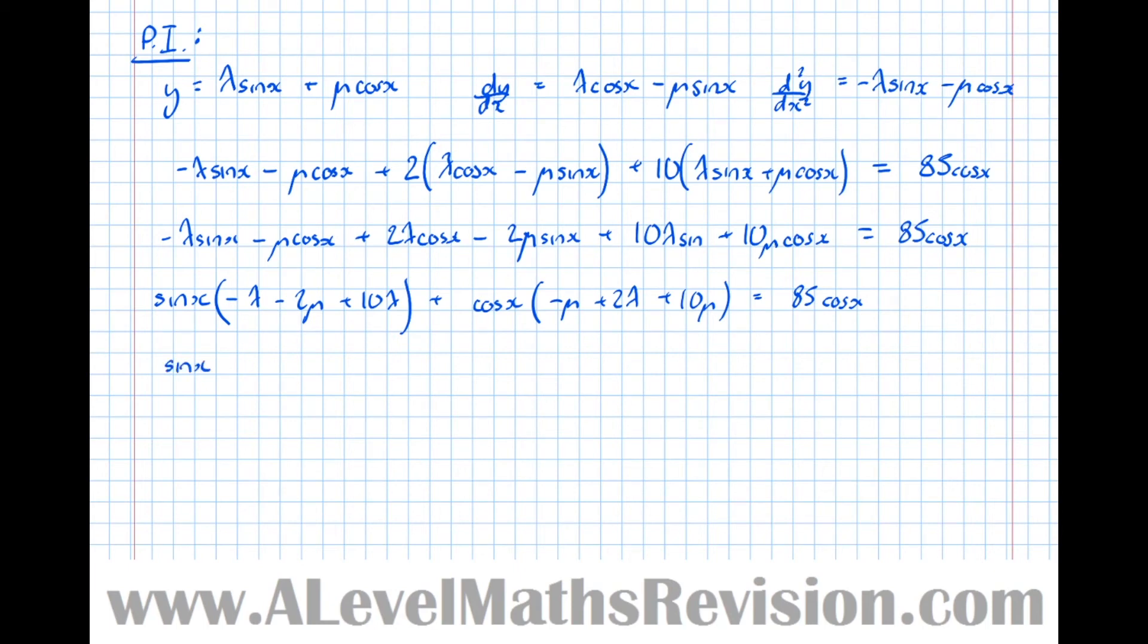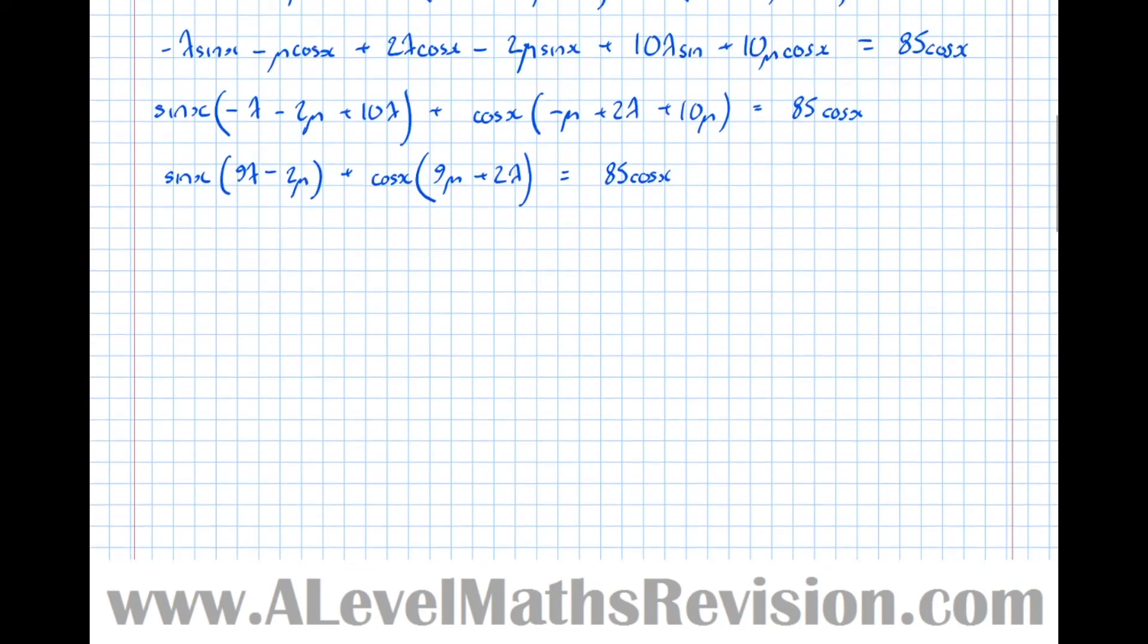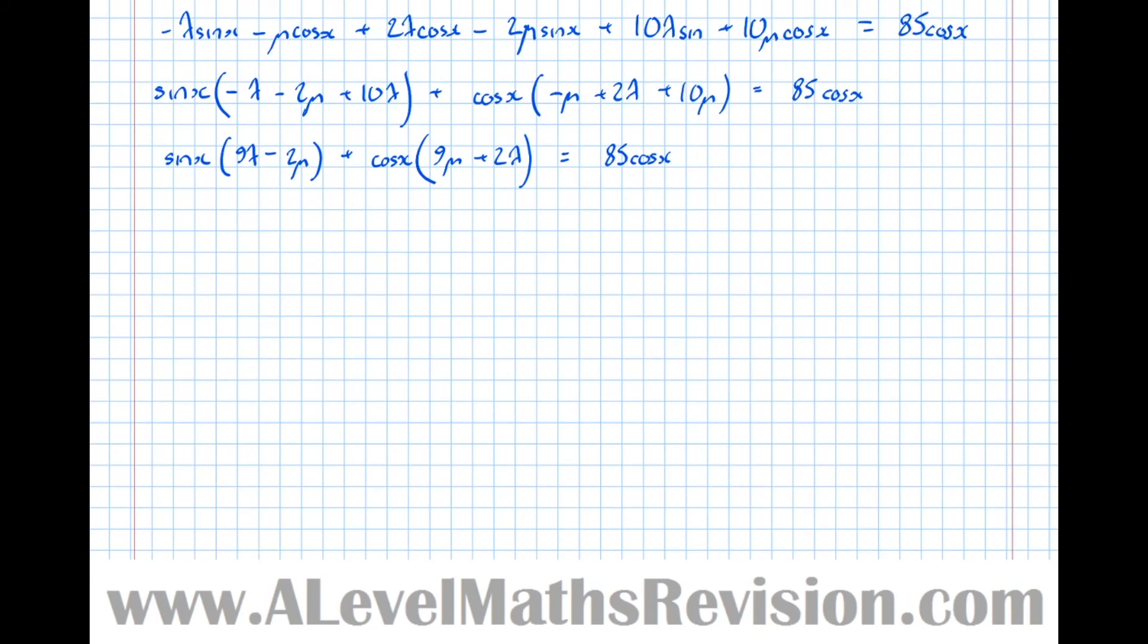So I get sin x times, and here we've got 9 lambda minus 2 mu plus cos x. And here we've got 9 mu plus 2 lambda equals 85 cos x. So we've got some simultaneous equations to solve now, because the coefficient of sine x on the left-hand side is 9 lambda minus 2 mu. So 9 lambda minus 2 mu,